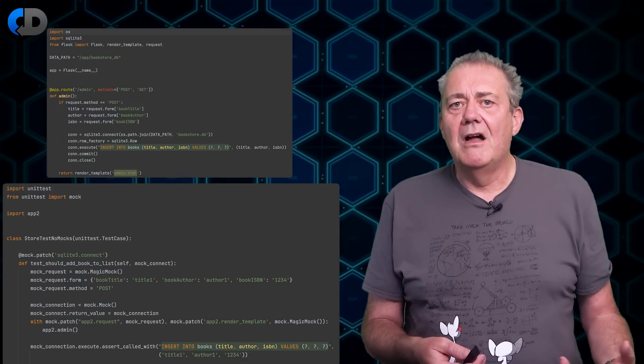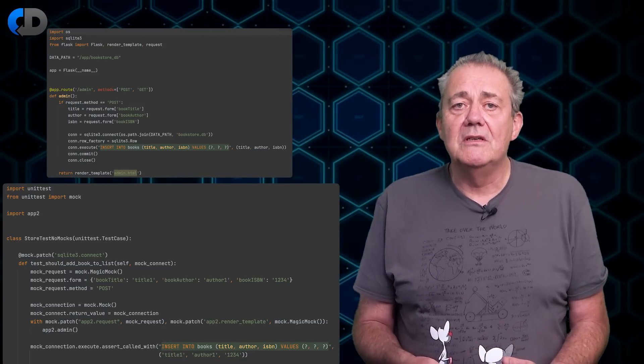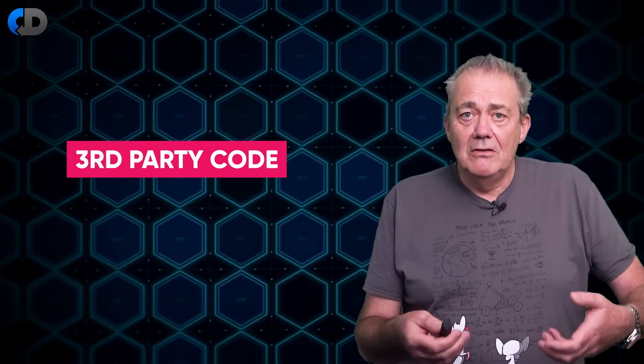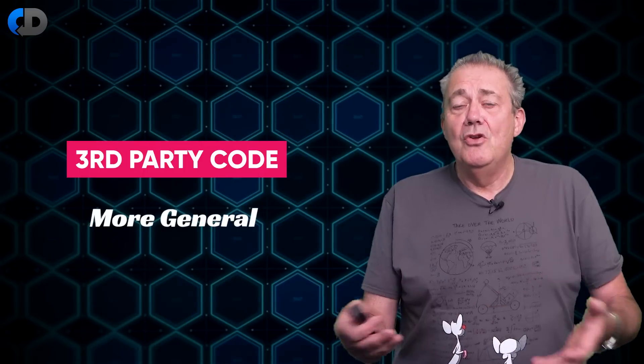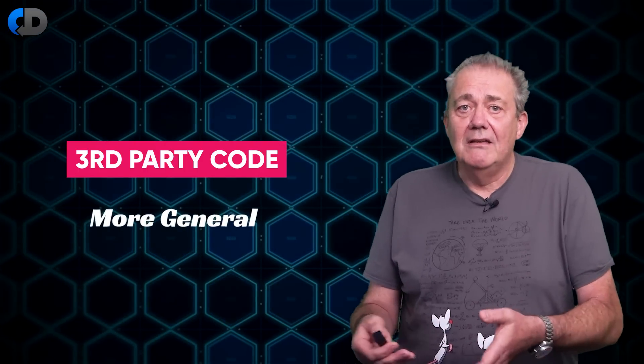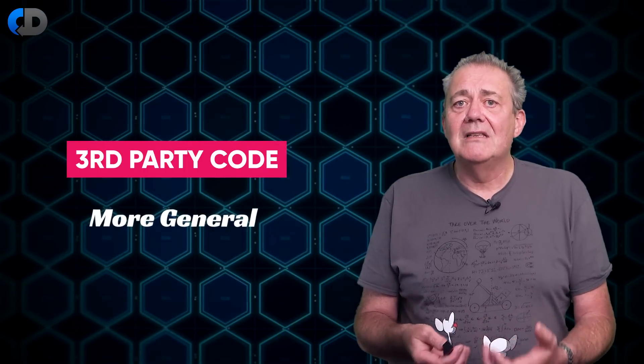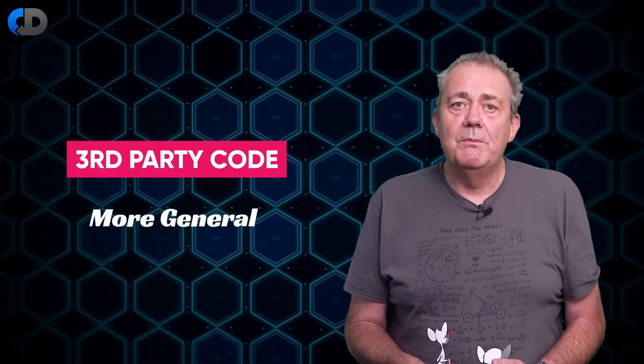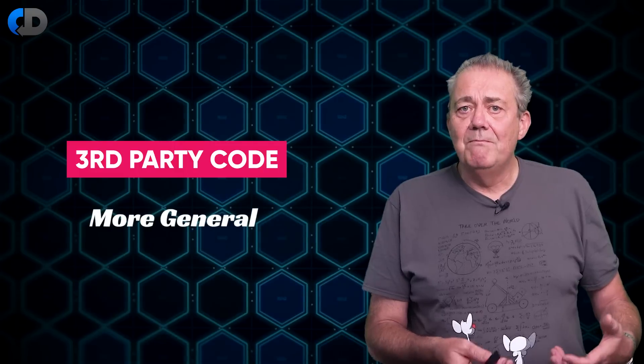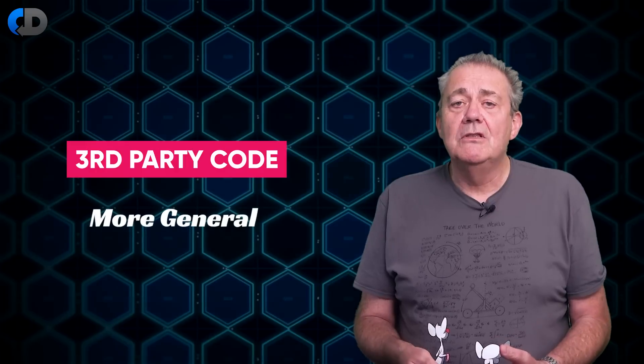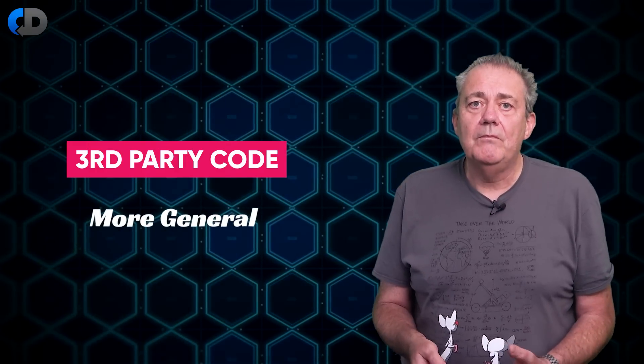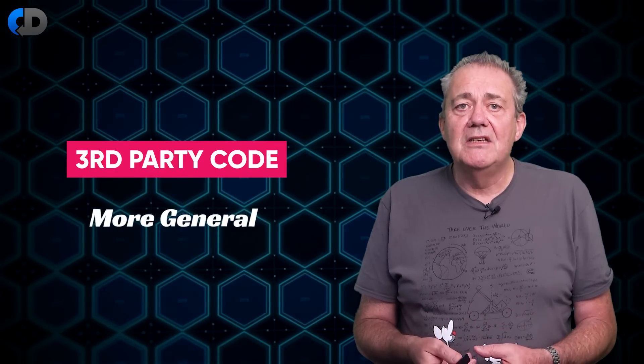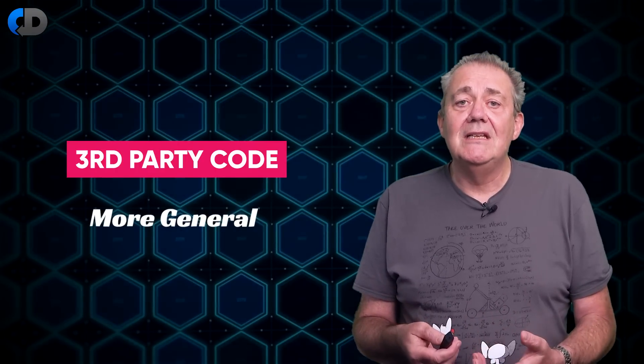The problem here starts with attempting to mock the third-party libraries. The third-party code is always going to be more generic, less targeted to your particular problem than your code will be. We're automatically, to some extent, leaving our design and our testing in the hands of the people who wrote the third-party code if we start from this point. This isn't because the third-party code is bad, but because it's designed to be generally useful, and it is. This means that it is inevitable that your interaction with the third-party code will be more complicated than you need it to be.